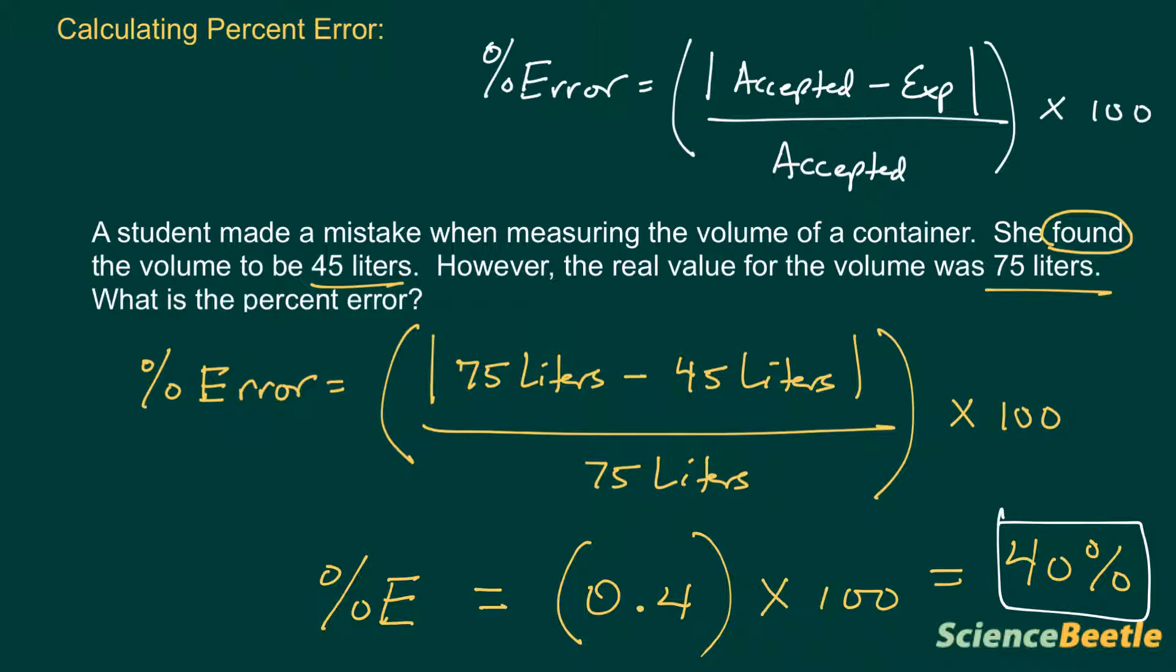What I want you to do is look at the way we set it up. First, identify which is the accepted value and which is the experimental value respectively. Plug them into the equation and then solve for it. Don't forget at the very end we got to make sure we report the right number of significant figures, so the last thing to do is to double check the answer that we circled.